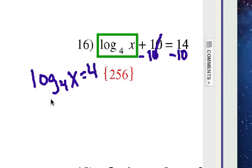That means that 4 is the base. 4 to the 4th power equals x. 4 to the 4th power is 4 times 4 times 4 times 4. You got it, 256.